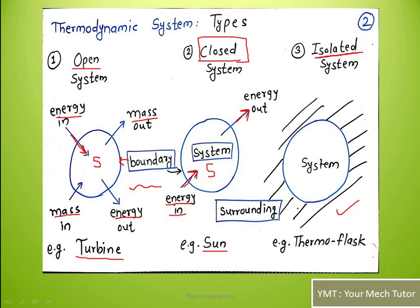The classic example of an isolated system is a thermoflask. If there is hot liquid inside, it stays hot because it is isolated from the surrounding due to insulation. So these are the three basic types of thermodynamic systems: open system — both energy and mass transfer, example turbine; closed system — only energy transfer, example sun; isolated system — no energy and mass transfer, example thermoflask.